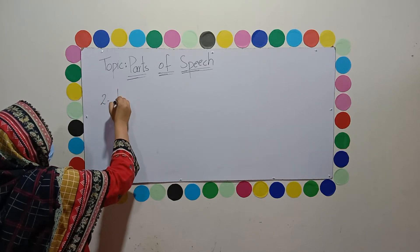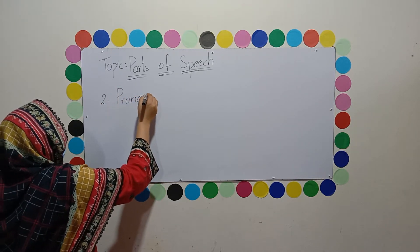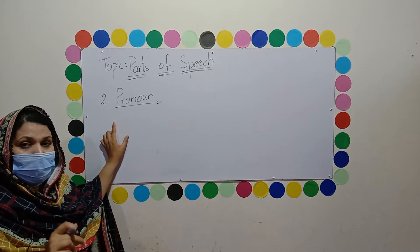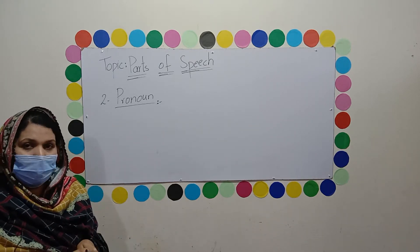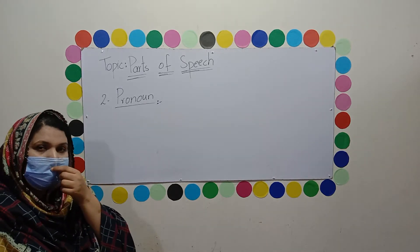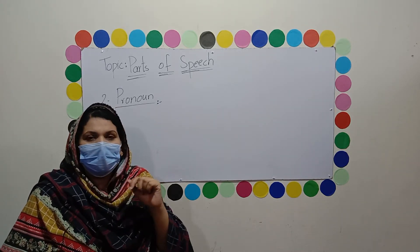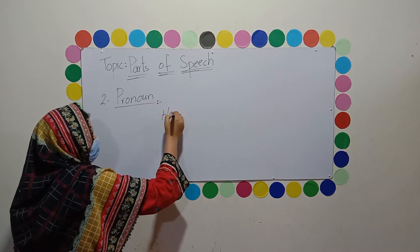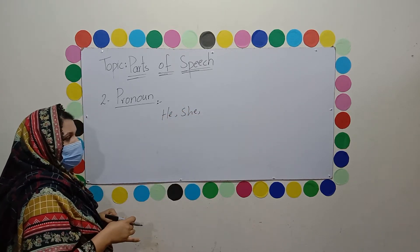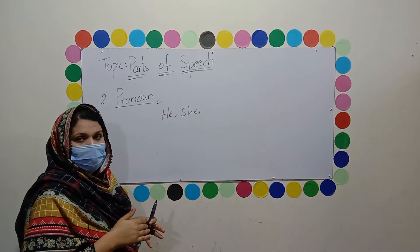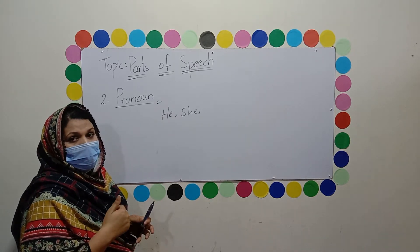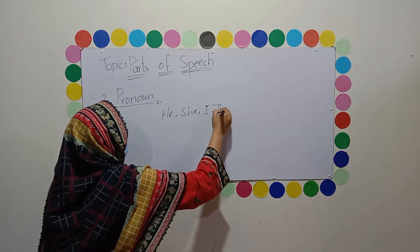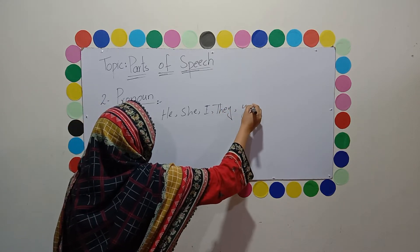This is the second part of speech — pronoun. It is a word used in the place of the noun. For example, pronoun words include he, she, and if I write about myself, I don't write Naila again and again. We write the pronoun I. Other pronouns include they and you. These types of words are called pronouns.